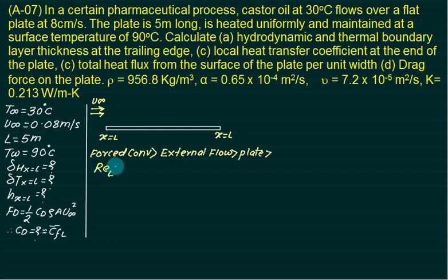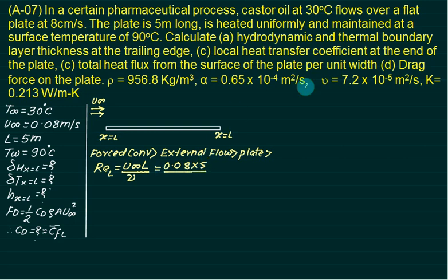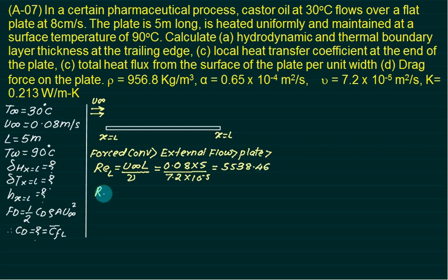The total Reynolds number ReL uses the characteristic length for flat plate external flow, which is L measured parallel to the flow. U_infinity is 0.08 m/s, plate length is 5 meters, and kinematic viscosity is 7.2 × 10⁻⁵ m²/s. The Reynolds number comes out to be 5538.46.